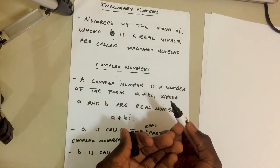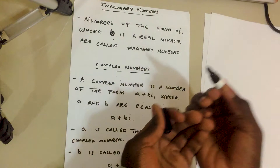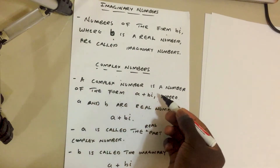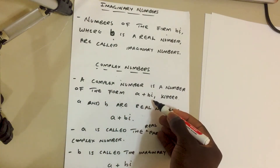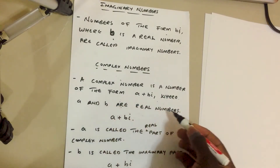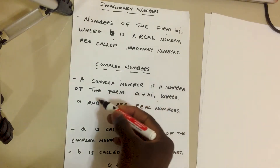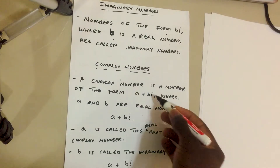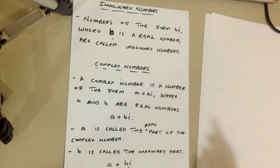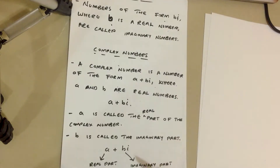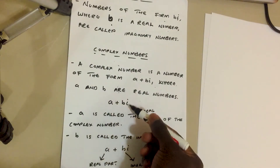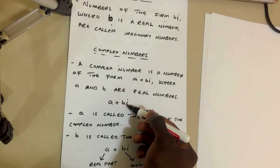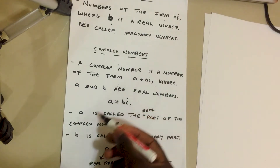Now that we know what imaginary numbers are, and what a unit imaginary number is, we can look at what complex numbers are. By definition, a complex number is a number of the form a plus bi, where a and b are real numbers. The i is not a real number — it's a unit imaginary number.